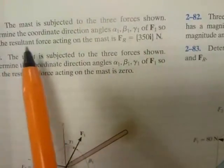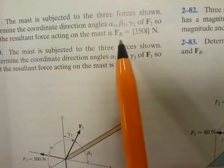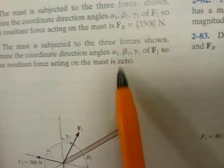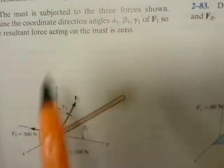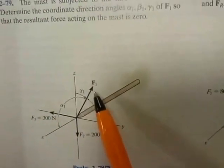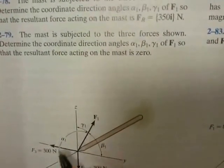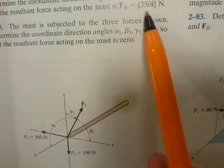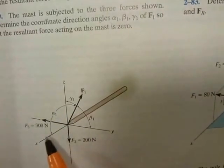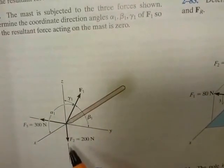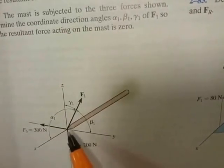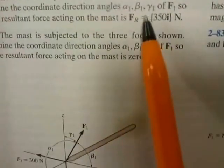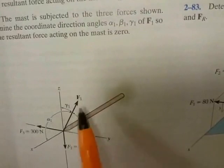The question says: the mast is subjected to three forces; determine the coordinate direction angles alpha1, beta1, gamma1 of F1 so that the resultant force acting on the mast is FR equal to 350i. So the resultant of the three forces gives us 350 in the x direction.